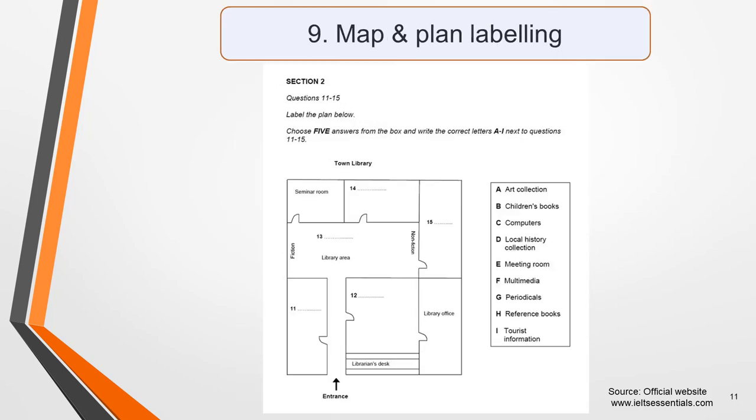For map, plan, and diagram labelling questions, you'll be given a plan of a building, a map of a specific location, or a diagram of something, and must fill in the missing labels. Many students find these one of the easiest question types to answer because the graphic will contain lots of clues as to the missing words, especially in the labels already present.